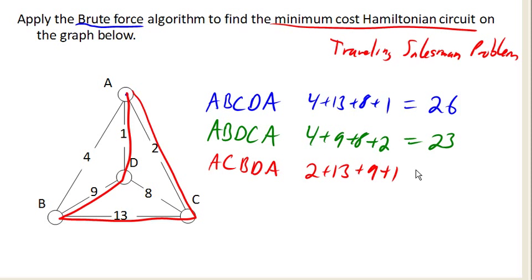And so of these three unique circuits, and it turns out that these are all the unique circuits, the one that is minimum cost is this one right here. So this is our minimum cost Hamiltonian circuit for this particular graph.